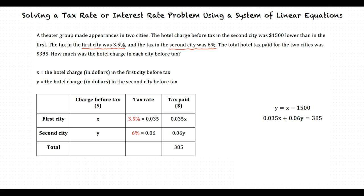The first equation is fine, but the second one needs to be changed by isolating the Y variable to one side. When we do that, we are left with Y is equal to the quantity of 385 minus 0.035X all over 0.06.